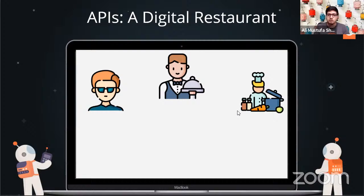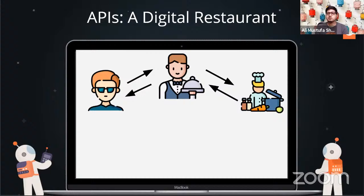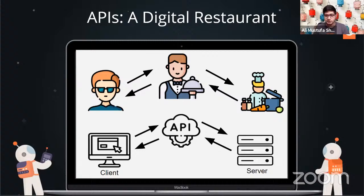APIs are very simple to understand. You might have seen that APIs are literally everywhere. Think of API as a digital restaurant. You go sit at the table, the waiter takes your order and goes to the kitchen. The chef prepares your food — the abstraction of preparing the food is hidden from you. The chef hands it to the waiter, who serves you on a good-looking platter. You send a request via the waiter and get a response via the waiter. Your waiter is acting as an API — a bridge between you and the kitchen.